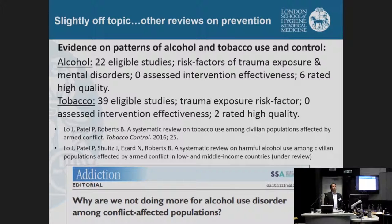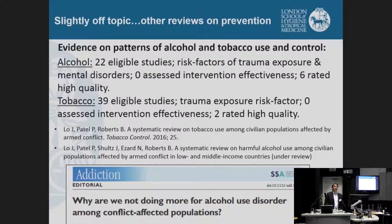Going slightly off-topic into the issue of prevention: other reviews we've been involved with also show a fairly negligible evidence base. Alcohol was mentioned earlier — there are potential risks for harmful alcohol use among conflict-affected populations, related to exposure to traumatic events and violence, impoverishment, and lack of opportunities. These are also known risk factors for a range of mental disorders, with strong evidence of comorbidity between mental disorders and harmful alcohol use, as well as links to non-communicable diseases and gender-based violence. Alcohol is, for me, a critically neglected issue.